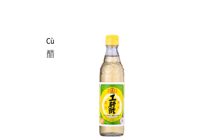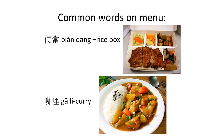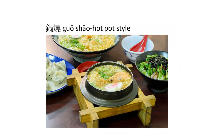醬油 is soy sauce. 辣椒醬 — 辣椒 is chili and 醬 is sauce, so it's chili sauce. 醋 is vinegar. 便當 is very common to see in Taiwan — it's a rice box, so for example 雞排便當 is a chicken fillet rice box. 咖哩 means curry. 鍋燒 — 鍋 means pot and 燒 means burn, so it's a hot pot style dish, usually served with noodles.